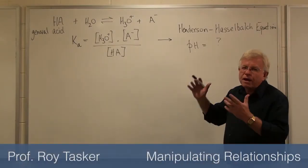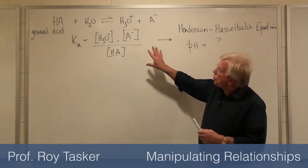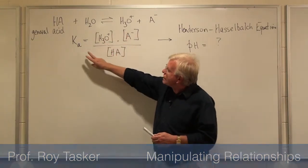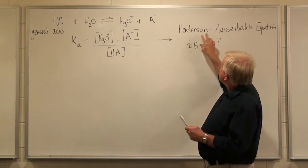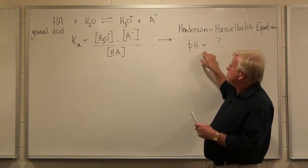As an example of manipulating equations, I want to show you how we can convert this mathematical equation for the acid dissociation constant Ka into the Henderson-Hasselbalch equation, which starts off pH equals something.